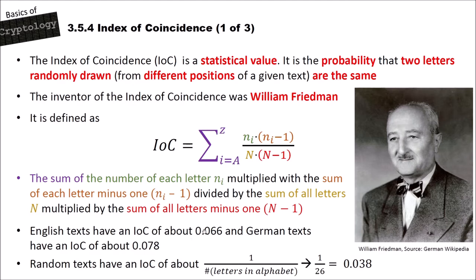For German text, the probability is slightly different — about 7.8%. You can calculate the IOC for different languages, and each language will have its own IOC value. To compute the IOC for a language, you take a very large text corpus, like the Gutenberg library or Wikipedia, calculate the IOC over all those books and articles, and for English you get 0.066, and for German 0.078.